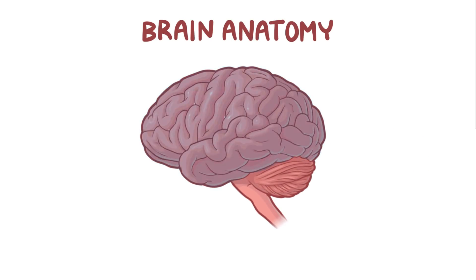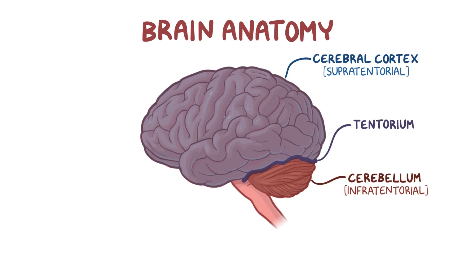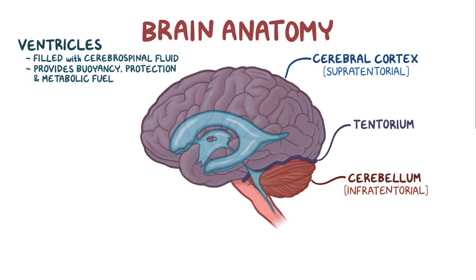Let's start with some basic brain anatomy. There's the cerebral cortex, which is the part of the brain that's supratentorial or above the tentorium, and the cerebellum, which is infratentorial or below the tentorium. The brain has four interconnected cavities called ventricles, which are filled with cerebrospinal fluid — a fluid that helps provide buoyancy and protection, as well as metabolic fuel for the brain.